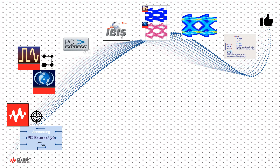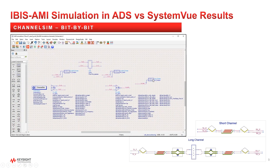Next, let's look at the simulation results comparing ADS versus System View. To verify the generated IBIS AMI model, the behavior from System View is compared to the results in ADS. This is an important step to identify any errors or C++ conversion mismatches. For instance, the model may run fine in System View, but on export if you set floating point values as integers, you'll see different behavior in your compiled C++ model. This can happen to experienced users, especially in a complicated model set with many features to manage. Correlating results between tools gives you confidence that no errors were introduced in any step of the process. What's shown here is the setup and channel SIM for ADS to use these IBIS AMI models.